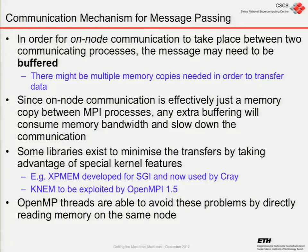These features are normally built into your MPI library, so you don't have to worry about them. KNEM is exploited by OpenMPI — we don't have OpenMPI on these systems. XPMEM is typically the one used by Cray, and it's a special way of allowing a single copy into a memory region and back out into the other process's memory. OpenMP threads can avoid these problems because you're just reading and writing to memory of the same process on the same node.